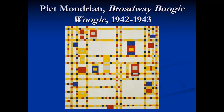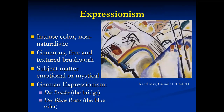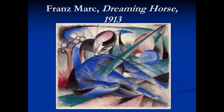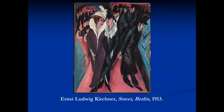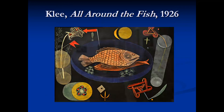Kandinsky's non-objective On White Too shows abstract images on a various-shaded white background sliced through with black. Expressionism is the art genre that features intense non-naturalistic color, generous free and textured brushwork, and emotional or mystical subject matter. The movement started with the German expressionist groups who called themselves Die Brücke and Der Blaue Reiter. Franz Marc, a member of Der Blaue Reiter, painted Dreaming Horse in 1913. Ernst Ludwig Kirchner was part of Die Brücke — this is his Street, Berlin. Emil Nolde painted Dance Around the Golden Calf. Paul Klee's All Around the Fish is a great example of the mystical aspect of Expressionism.